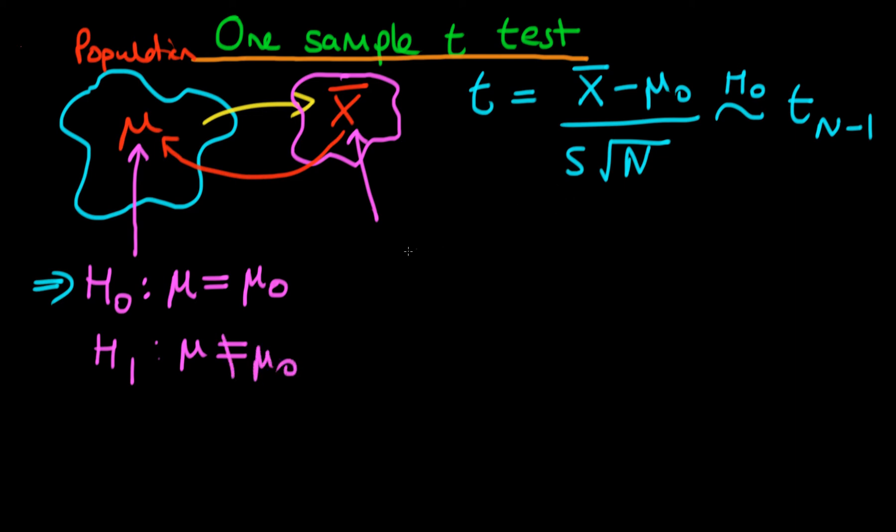In talking about s here, I said that we were going to use the corrected version of the standard deviation, of the sample standard deviation, which is defined as the square root of 1 over n minus 1 times the sum from i equals 1 to n of xi minus x-bar, all squared. And the fact that we've got n minus 1 here is because of Bessel's correction.